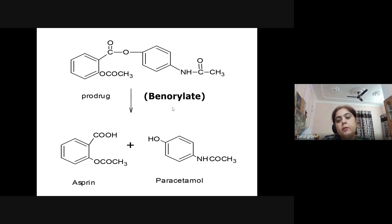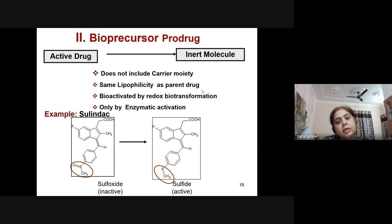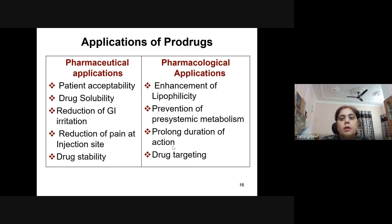Another good example of a mutual prodrug is benorilate, which is converted into the active drugs aspirin and paracetamol inside the body. The second class of prodrug is bioprecursor prodrugs, where the active drug is converted into an inert molecule. This does not include any carrier moiety and has the same lipophilicity as the parent drug. Bioactivated by redox biotransformation and enzymatic activation, they are converted into active form. An example is sulindac, a non-steroidal anti-inflammatory drug with a sulfoxide group converted into the active drug inside the body.